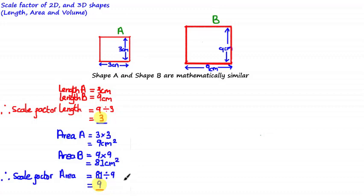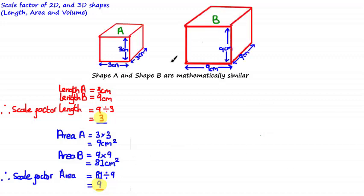Let's extend this idea to 3D shapes by adding a third dimension. Shape A is now a cube that is 3×3×3cm, and shape B is a cube that is 9×9×9cm. Since we're looking at 3D shapes, a measurement we can use to describe the enlargement of similar shapes is the surface area. If both shapes are mathematically similar, we should be able to find a scale factor for surface area using the same method.